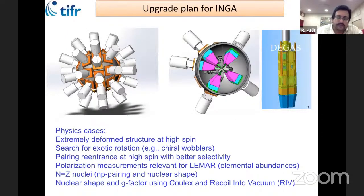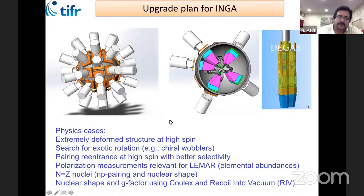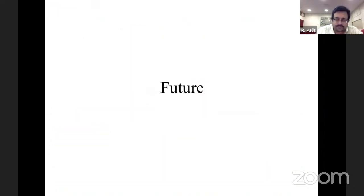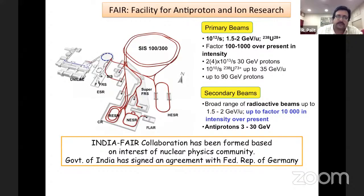In future we want to upgrade the array with a larger number of detectors. We are also working on development of another detector for FAIR, and if possible we will couple INGA with the DEGAS detectors, enhancing the efficiency by a factor of two, enabling many interesting physics problems to be studied.